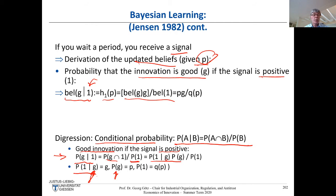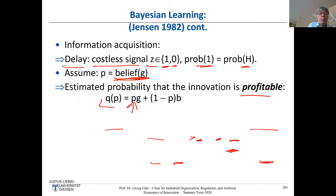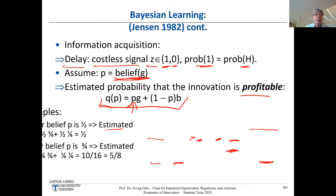What is the probability of receiving a good signal? You receive a good signal if the respective agent had a high profit. The probability of that was Q — derived on the previous page — which is just the overall probability of a high profit. Given these probabilities, we can immediately determine the updated belief for the next period.